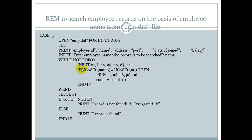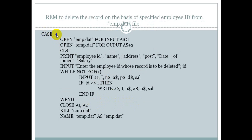While not EOF, INPUT#1 reads the content of the data file. If the entered num dollar equals the stored n dollar — meaning the search keyword matches the stored name — then PRINT records and count equals count plus one. When we close the file, if count equals zero, then we print 'record not found, try again'. If the record is found, count is incremented, so if count equals zero then the record was not found.